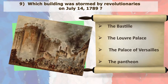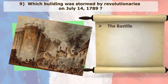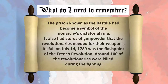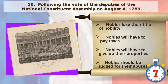Which building was stormed by revolutionaries on July 14, 1789? The Bastille. The prison known as the Bastille had become a symbol of the monarchy's dictatorial rule. It also had stores of gunpowder that the revolutionaries needed for their weapons. Its fall on July 14, 1789 was the flashpoint of the French Revolution. Around 100 of the revolutionaries were killed during the fighting.